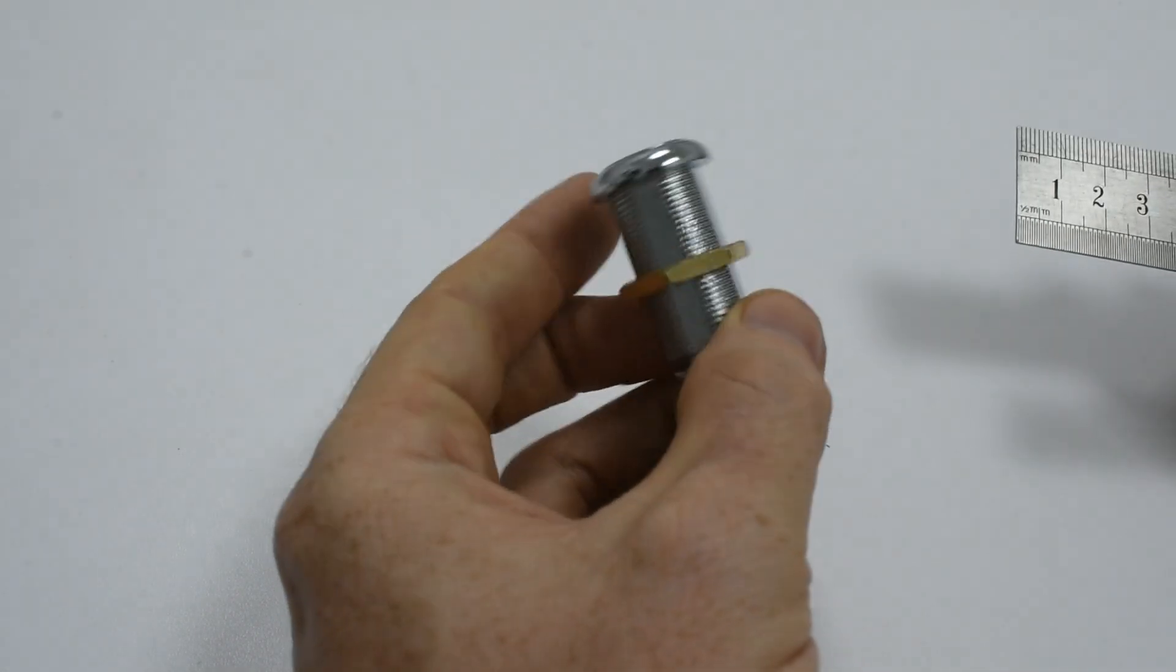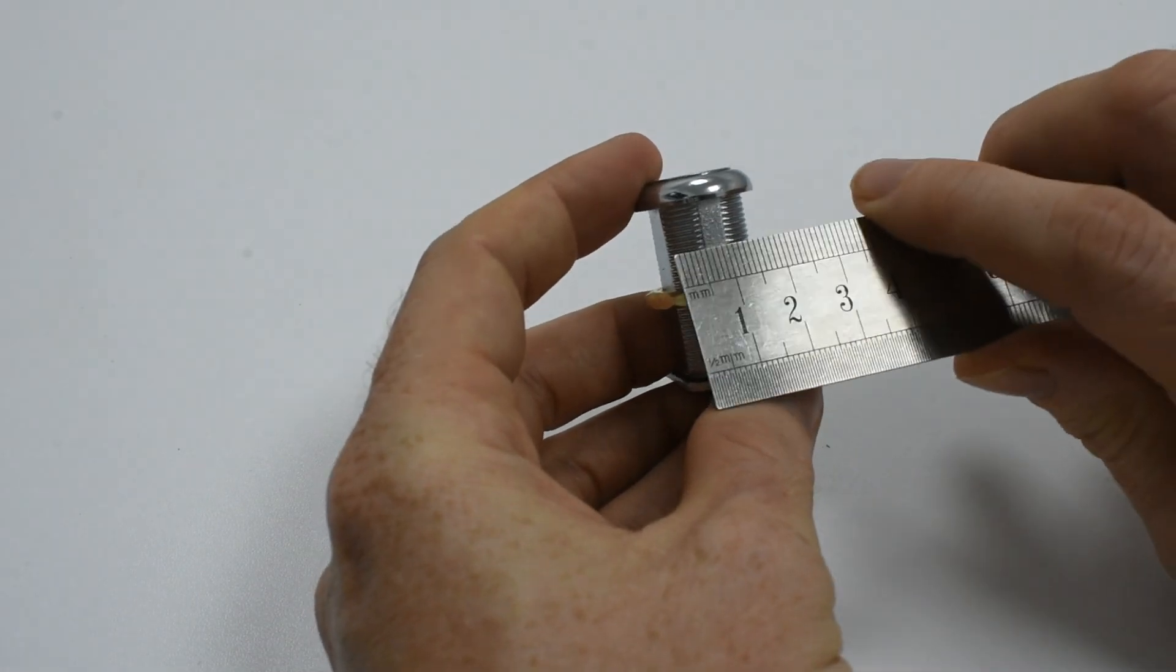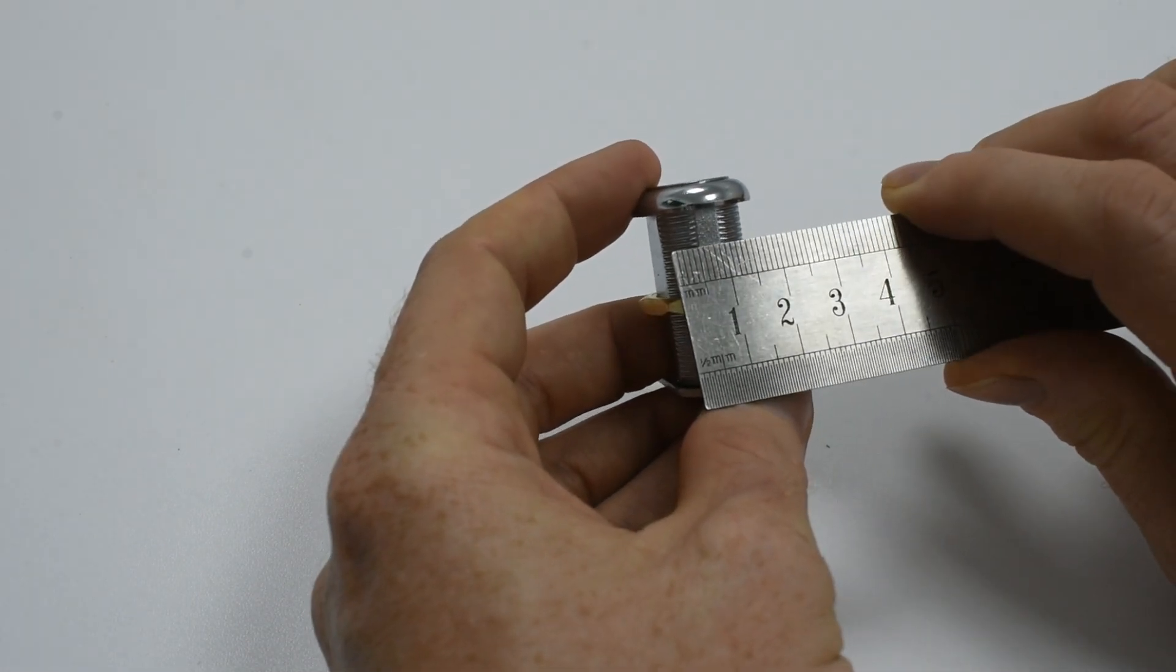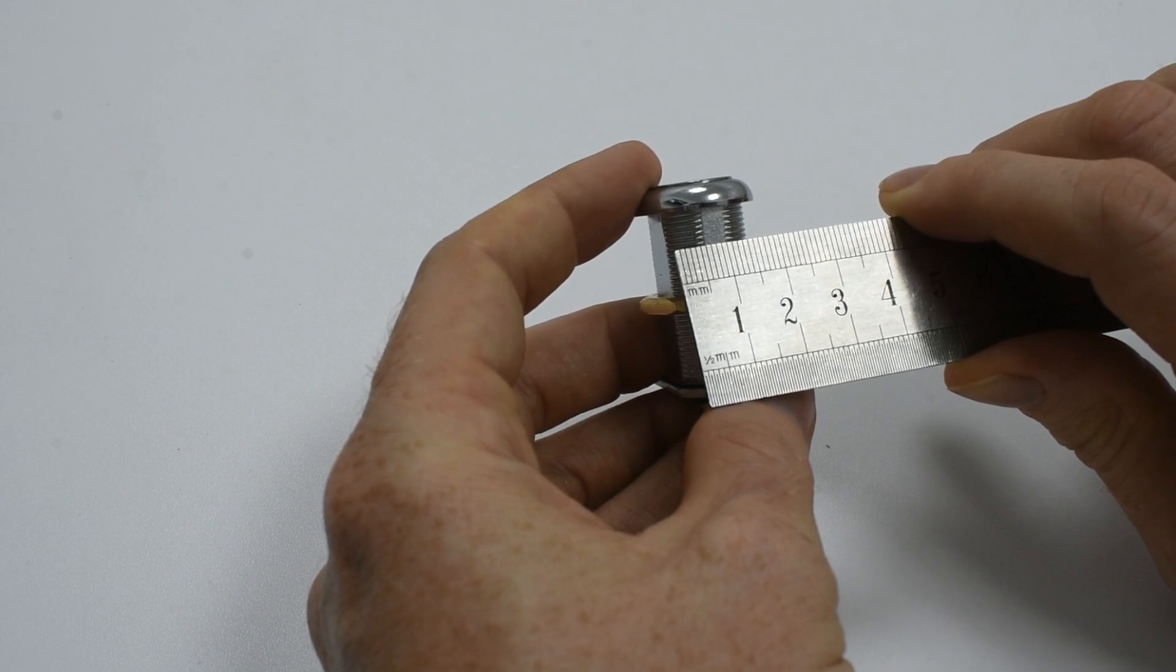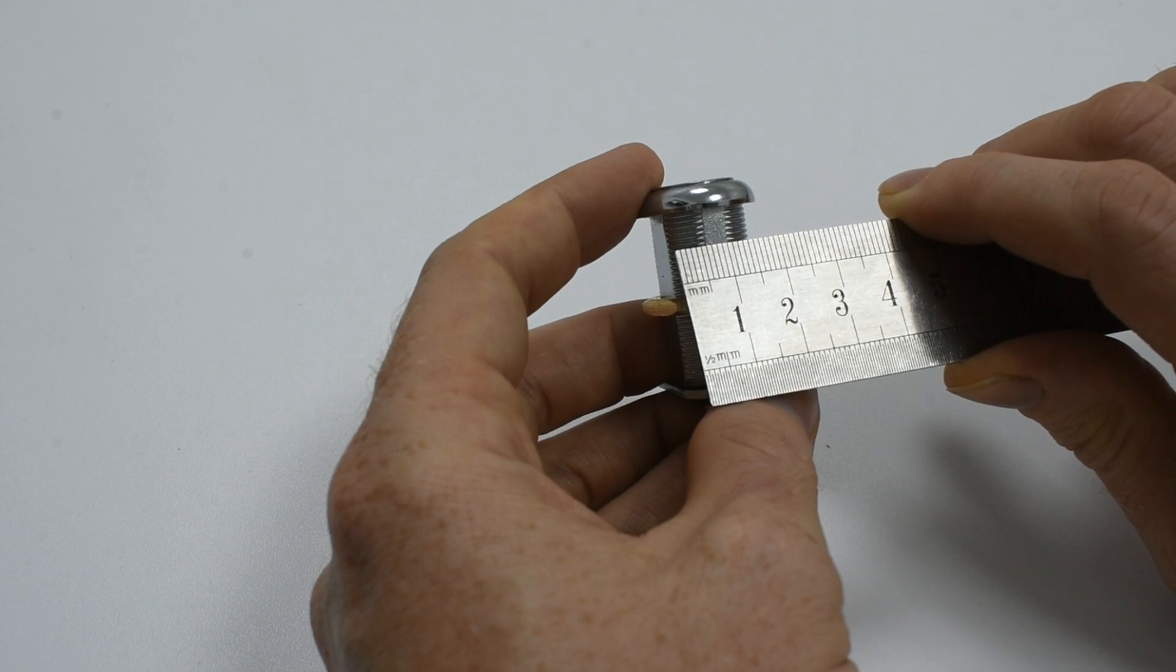The body width is then needed. This is a measurement across the body at its narrowest point or between the flats. This is officially quoted as 16 millimeters in the specs for this cam lock.